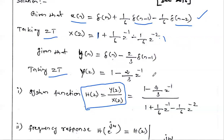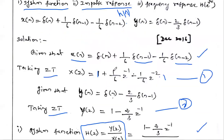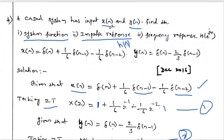Substituting the values — this is equation number one and this is equation number two — we substitute the values of Y(z) and X(z). We get: H(z) = (1 − (2/3)z^(−1)) / (1 + (1/6)z^(−1) − (1/6)z^(−2)). This is the system function, so the first question is answered.